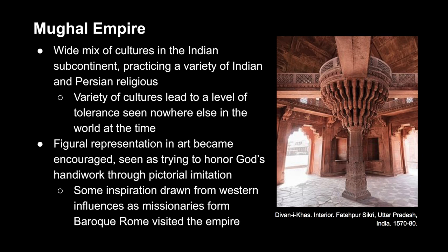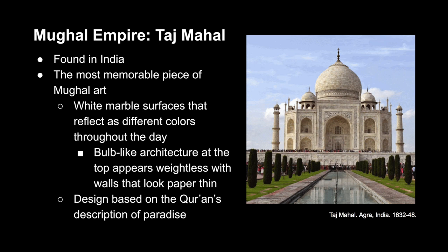The Mughal Empire was a wide mix of cultures in the Indian subcontinent. It contained a variety of cultures and Indian and Persian religions, which led to a level of tolerance seen nowhere else in the world at that time. We also see an artistic shift, as figural representation in art became encouraged instead of frowned upon — it was now seen as trying to honor God's handiwork through pictorial imitation. It also saw some inspiration from Western influences as a result of Baroque Roman missionaries visiting the empire. One of the most well-known pieces of Mughal art and architecture is the Taj Mahal, found in India. The white marble surfaces reflect different colors throughout the day, and the bulb-like structures on top almost appear weightless, with walls that look paper-thin. The design was based on the Quran's description of paradise, and the structure was created for the emperor's wife when she died — it houses her tomb, his tomb, and a mosque.